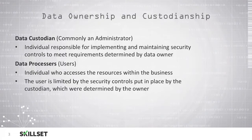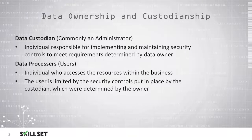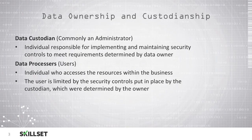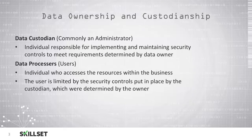Whenever you have a new piece of data, the data owner is the one who decides the security controls that need to be put in place for that data. The data custodian then implements those controls and also makes sure that the data is backed up appropriately. And the data processors are the individuals who access the data as part of their job function.